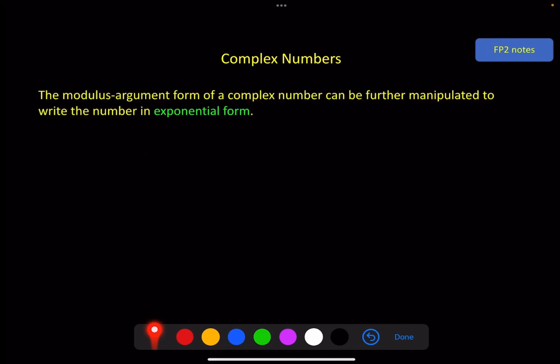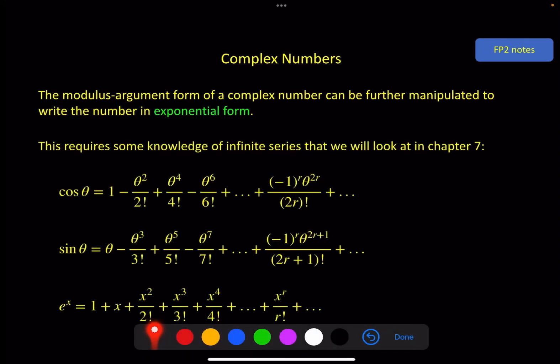The modulus argument form that we looked at in the starter can be further manipulated to write the number in exponential form. Now, to do this, we need a chunk of work that we have not yet done from chapter 7. Now, don't panic. We're not going to go through all of this.